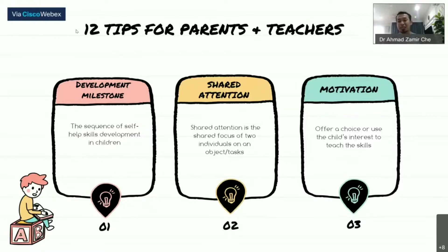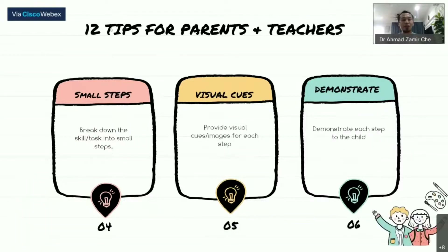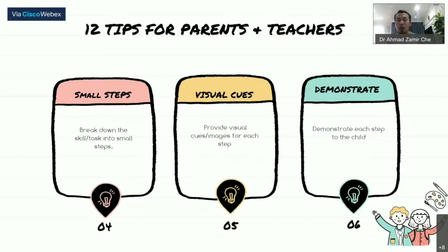Tip number four is to use chaining, or break down the task. If the task is complex, break it down into small steps — it can be three steps, five steps, or seven steps. It depends on you and on the ability of your child.